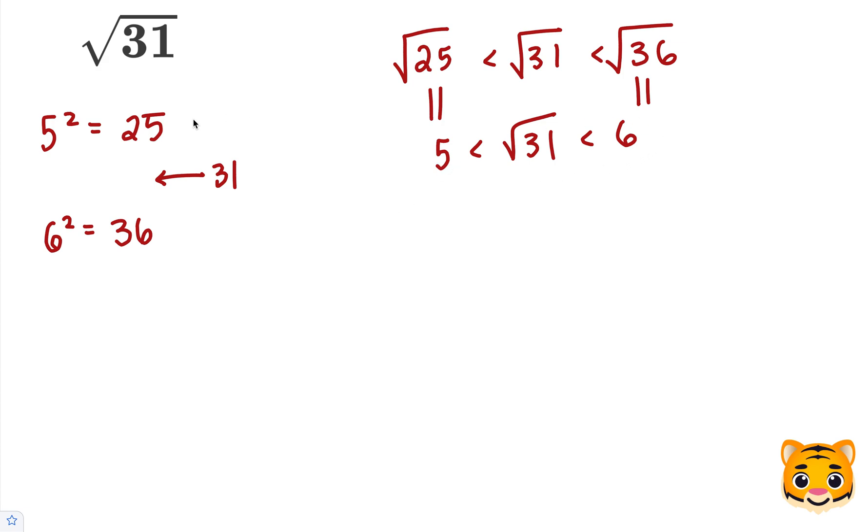It's pretty equally spaced between 25 and 36, so we can try a value such as 5.5 squared to see how close we can get to 31. So we'll multiply 5.5 times 5.5.